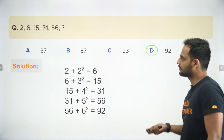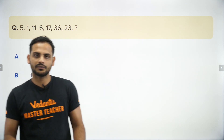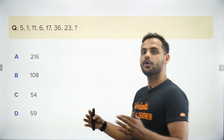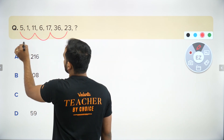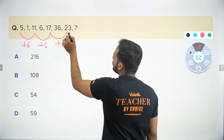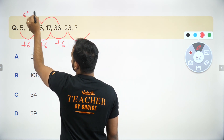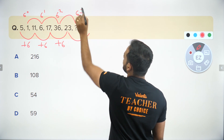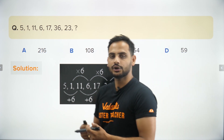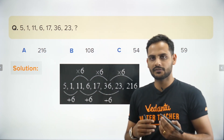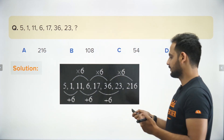The next question is: 5, 1, 11, 6, 17, 36, 23, and what? You can clearly see the numbers are increasing and decreasing alternately, so this is a combination of two sequences. Looking at 5, 11, 17, 23 — each increases by 6. For the other sequence: 1, 6, 36 — that is 6⁰, 6¹, 6² — so the next term is 6³ = 216. The correct answer is option A, 216.